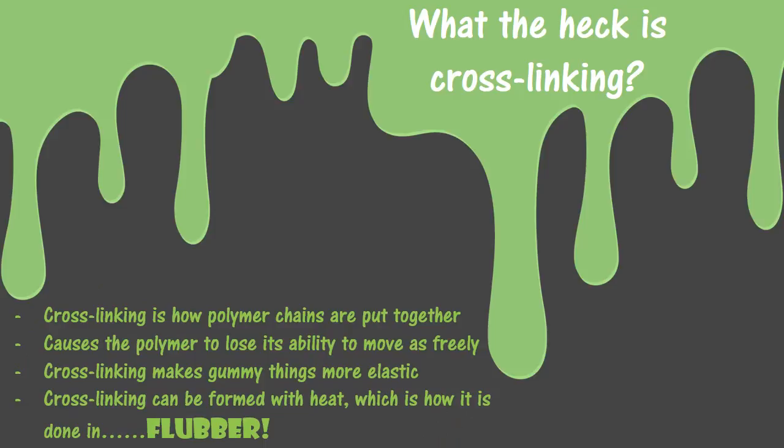So, cross-linking. Cross-linking is basically how you make polymer chains. If you mix up the borax laundry detergent and water, you just have a bowl of soapy water. But if you add PVA and heat it up, it's going to make these cross-linking bonds, which will eventually turn it from a liquid into a more elastic substance. A gross example: if you were chewing bubblegum and stretching it out of your mouth with your hands — it's really elastic and kind of snaps back. It's similar in consistency to that. Cross-linking makes liquid things more gummy, and then adding more heat makes gummy things elastic. One of the ways cross-linking can be formed is with heat, which is how we're going to make flubber.